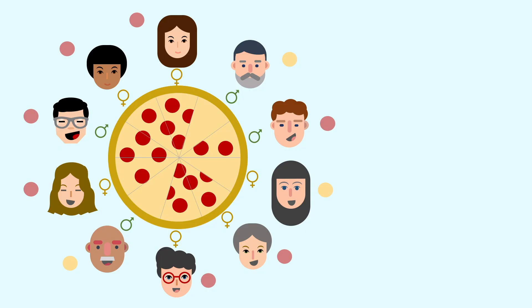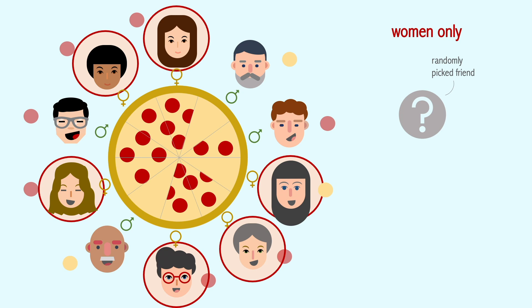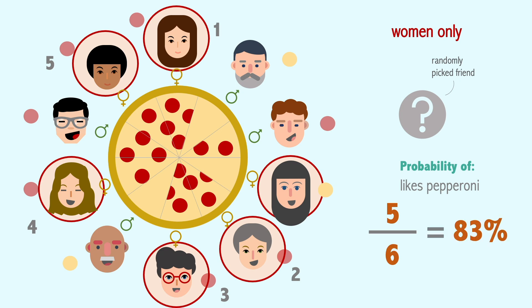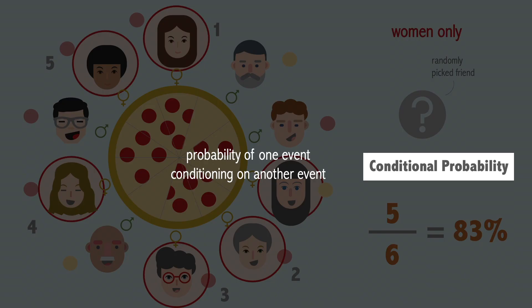Now, if we were to choose someone at random only from the group of women and we want to know the probability that she enjoys pepperoni on pizza, we'll only look at the women in this group. There are six women, and five out of six — or 83% — of women enjoy pepperoni on pizza. This is called conditional probability. Conditional probability is where we want to find out the probability of one event while conditioning on another event. In this case, we found out the probability of pepperoni preference given the condition that this person is a woman. Conditional probability is written as p of x given y, where the vertical bar represents conditional.